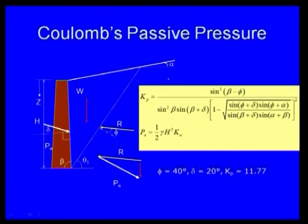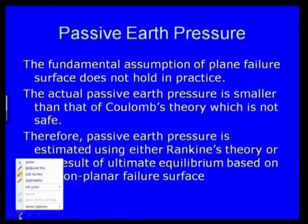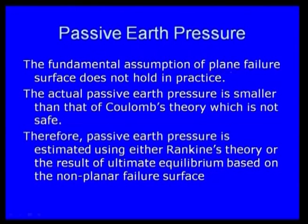For Coulomb's passive pressure, PA = ½ γ H² Ka. For example, if phi = 40° and delta (friction angle between soil and wall) = 20°, the Kp value comes out to be 11.77. However, there is a limitation: the fundamental assumption of a planar failure surface does not hold in practice. The actual passive earth pressure is smaller than that predicted by Coulomb's theory, which is not safe.